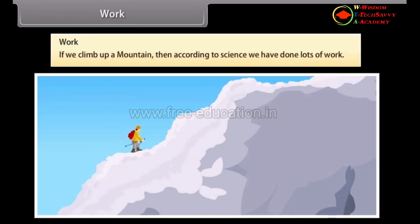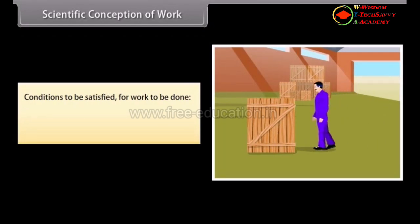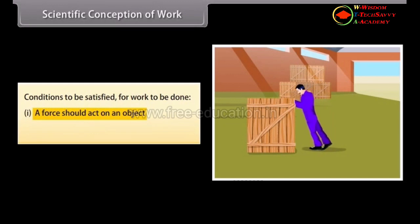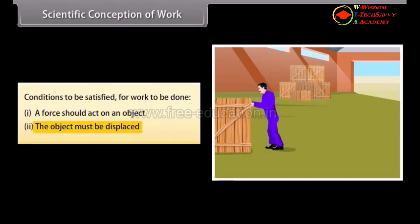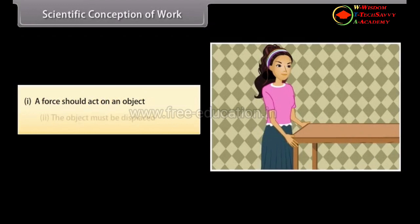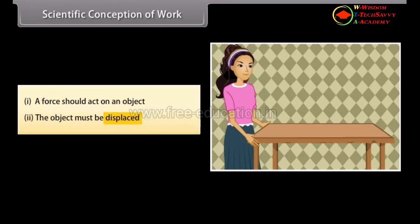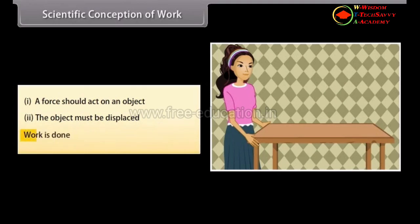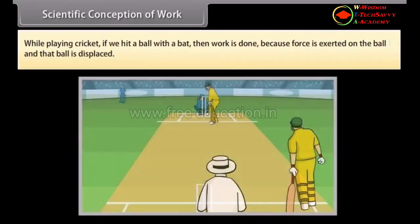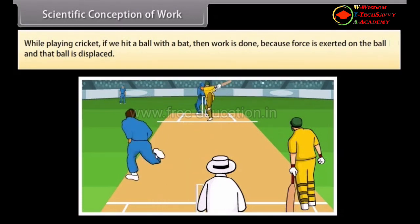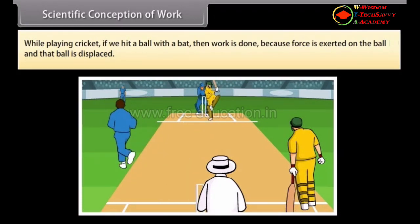We use and define the term work differently in science. For example, if we climb up a cliff, then according to science, we have done lots of work. For work to be done, two conditions should be satisfied: first, a force should act on an object; second, the object must be displaced. If we pull a table and the table moves through a distance, both conditions are satisfied, so work is done. Similarly, while playing cricket, if we hit a ball with a bat, work is done because force is exerted on the ball and the ball is displaced.